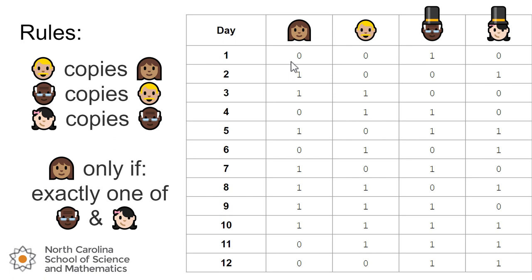Where are we going to get our random stream of ones and zeros? We're going to look at that last column. If we just looked at the numbers in that last column — 0, 1, 0, 0, 1, 1, 0, 1, 1, 1 — and you knew nothing about this situation and the rules at play, that would probably look random to you, even though there's a nice deterministic system that created it.